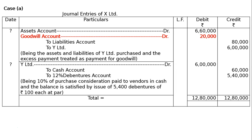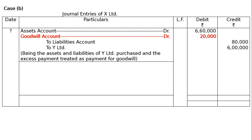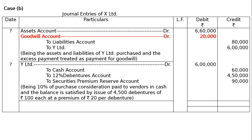In Part B, the purchase consideration is payable 10% in cash and the balance in 4,500 12% debentures of Rs. 100 each issued at 20% premium. Part B: the first entry will be the same for both cases. Second entry — vendor's account (Y Ltd.) debited Rs. 6,00,000; to cash account 10% of Rs. 6,00,000; to 12% debentures account — that is 4,500 debentures at Rs. 100 each, Rs. 4,50,000.